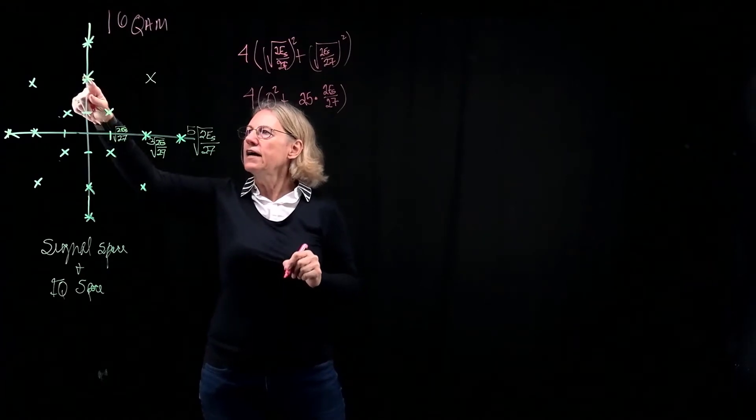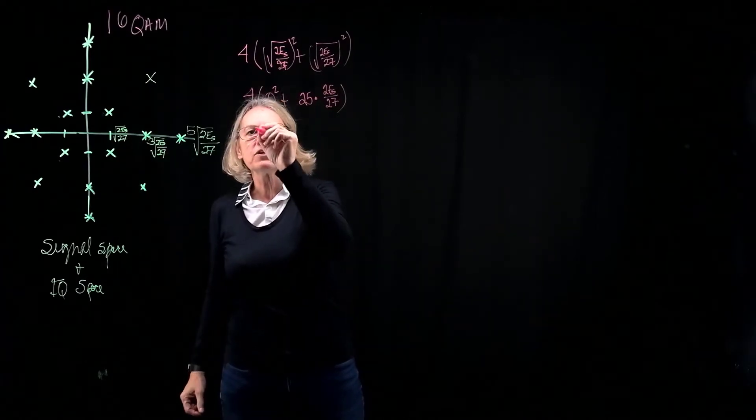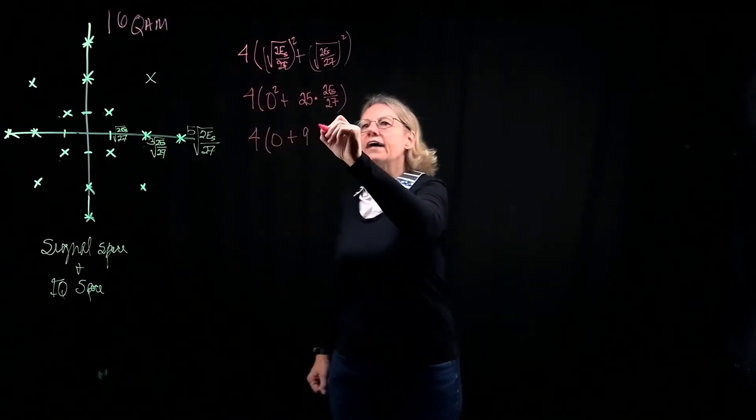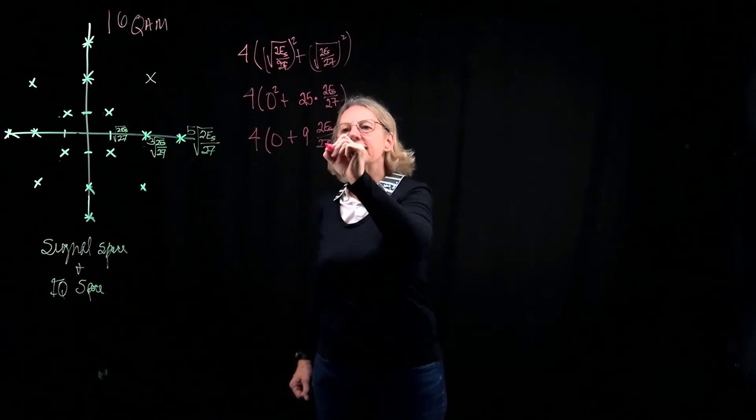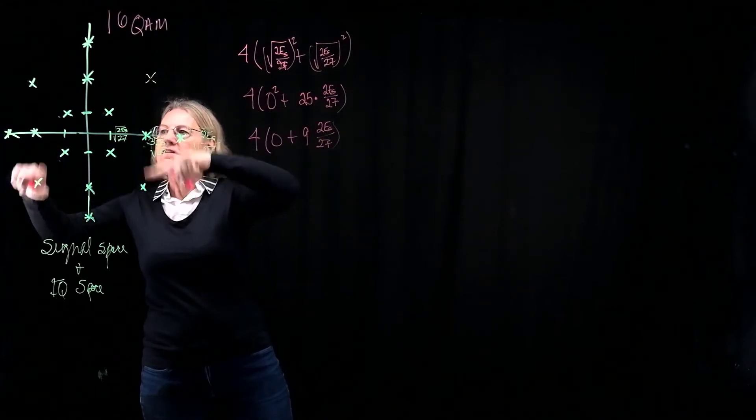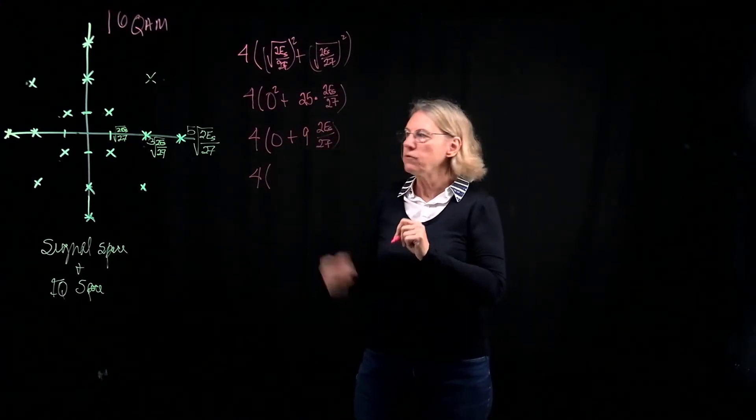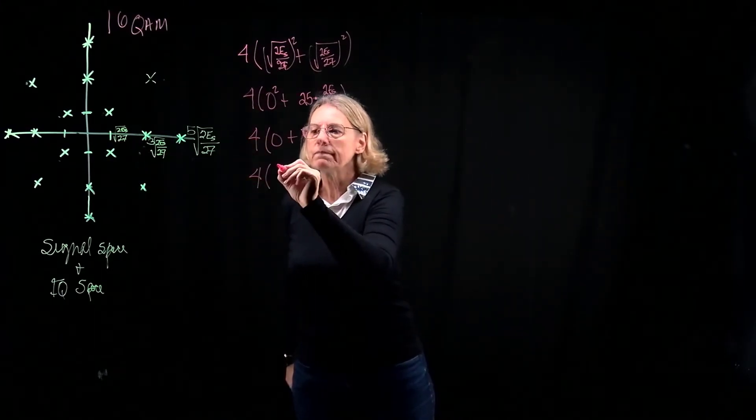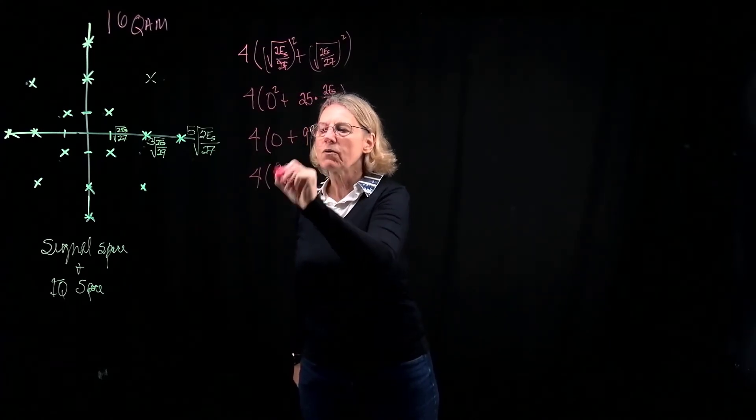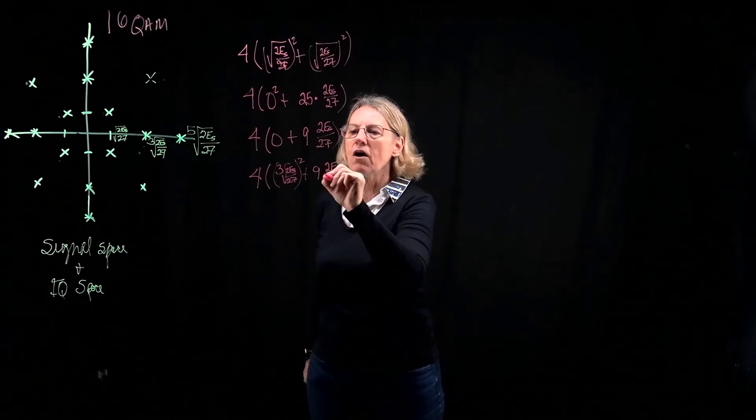So now we'll look at the other three in this sort of diamond shape. And these would be very similar to the last one, except that now it's 3 as the coordinates. So squared would be 9 times 2ES over 27. And now the final four we haven't looked at yet are these here, these four points, where we have an x and a y-coordinate, which are the same. In this case, it's 3, the square root of 2ES over 27, quantity squared. And of course, the same thing here, which would give us 9 times 2ES over 27.